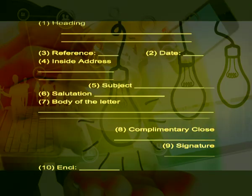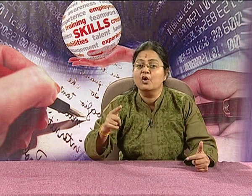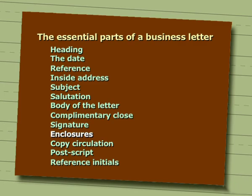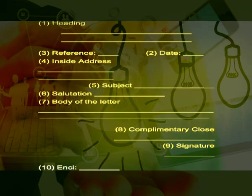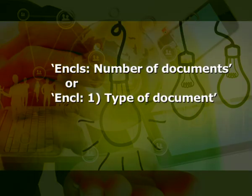Signature. The signature is usually handwritten. The name and designation of the sender are generally typed below the signature. Enclosures. The enclosure is written after the signature near the left margin when there are documents to be sent along with a letter.